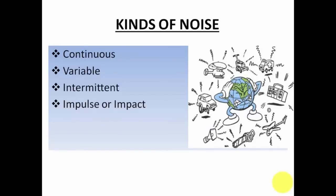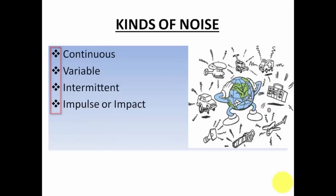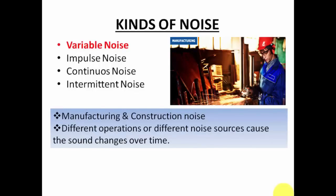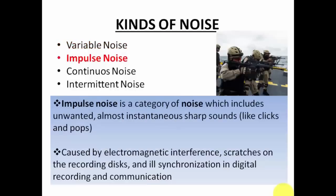We have various kinds of noise. Different kinds of noise are: continuous noise, variable noise, intermittent noise, and impulse or impact noise. We will talk about these different kinds of noise one by one. The first kind is variable noise. Variable noise is generally found in manufacturing and construction, because these operations will generally have noise that varies — the sounds will change at different intervals of time, sometimes high pitch, sometimes low pitch.